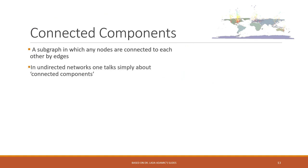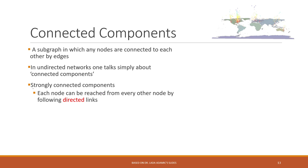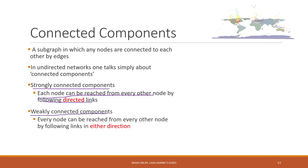In undirected networks we simply talk about connected components. In directed networks, we have strongly connected components, which means each node can be reached from every other node by following those directed links. And a weakly connected component means you cannot follow each other from every other node by following directed links — as long as you can follow each other in either direction. For weakly connected components, we lower the threshold for defining connections; for strongly connected components, you must reach each other following the directed links.